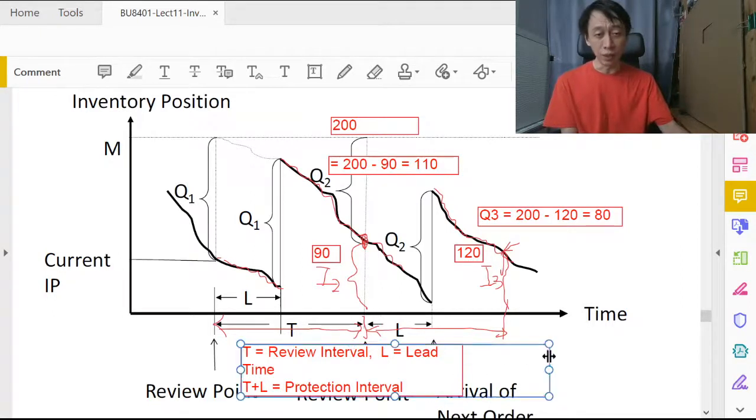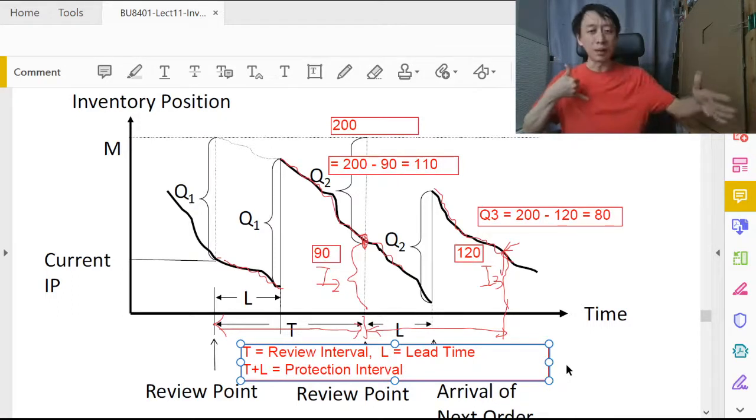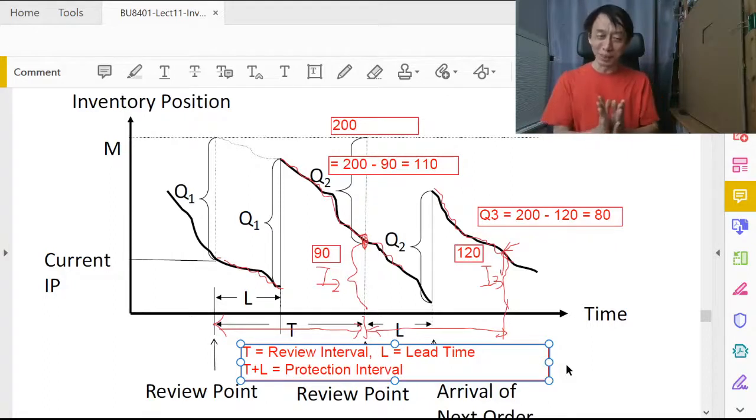Remember our discussion of continuous review with probabilistic demand, where we say demand during lead time is very critical? After we make an order, the lead time starts and that's when we worry demand better not be too extremely large, which could clear out our inventory and leave us unable to meet customer needs. We need to know the distribution very well.